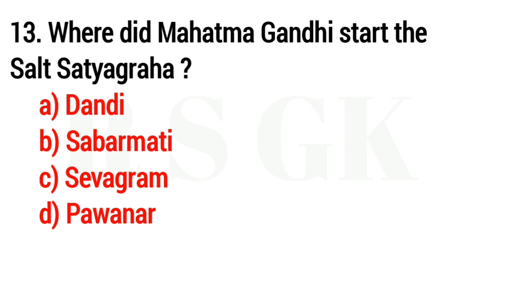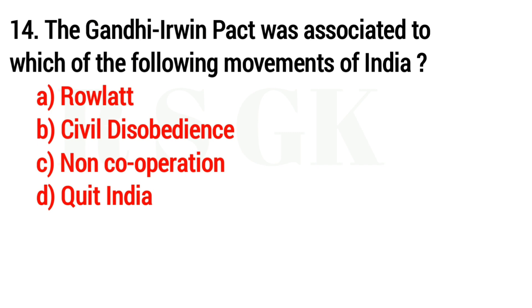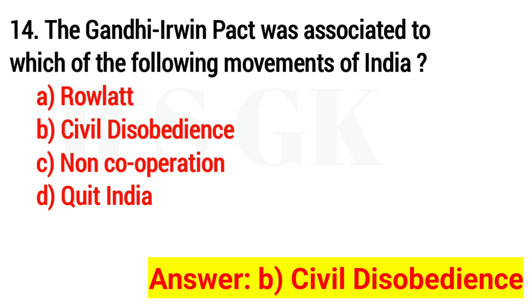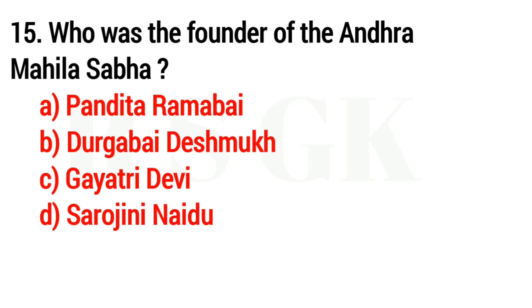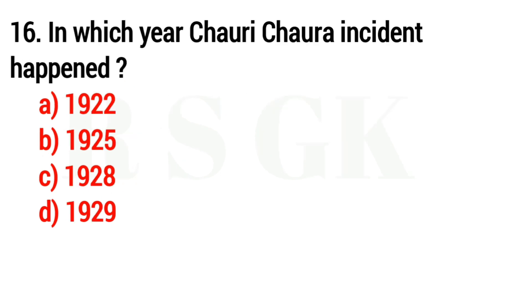Question 13. Where did Mahatma Gandhi start the Antra Mohila Sabha? The answer is option B: Durgabai Deshmukh.